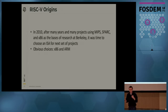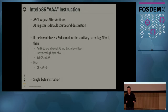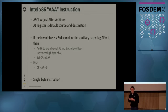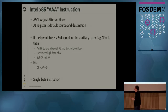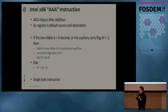x86 is the obvious choice because it had the vast majority of software support. Let's look at the first instruction in the x86 manual — the AAA instruction. This instruction is great if you're trying to build a calculator, which is what x86 was originally designed for. The 4004 was sold in the calculator market. This instruction provides binary-coded decimal support, and it turns out it's a single-byte instruction on modern x86 systems.